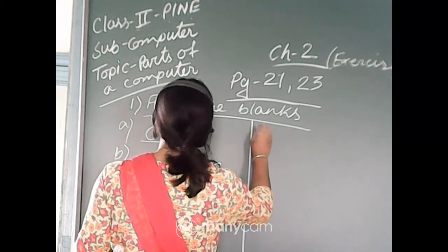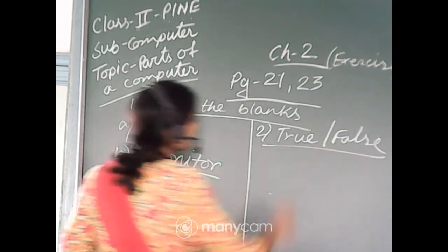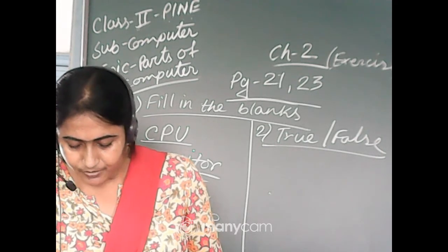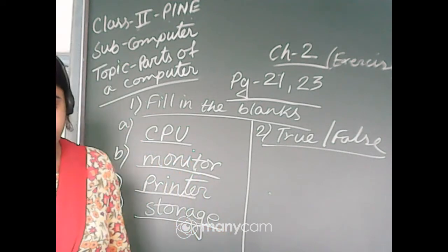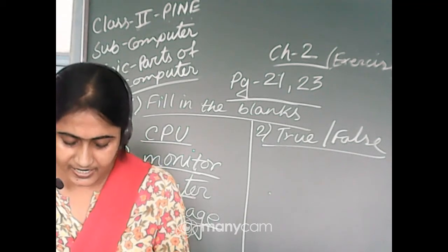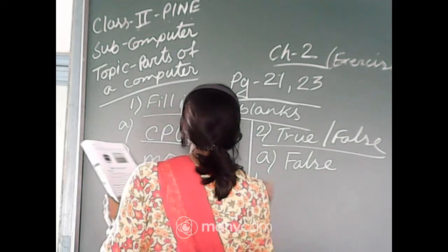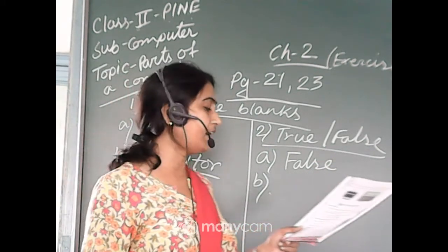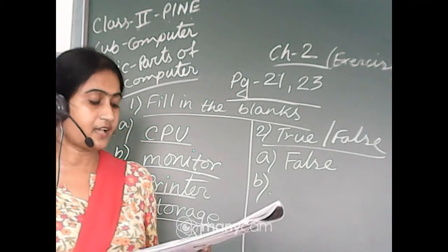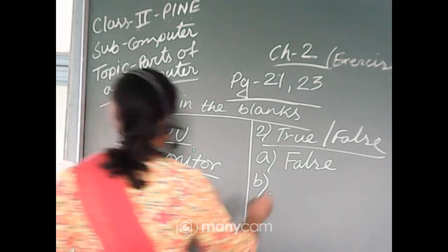Now, on the right side, true or false. Number A: a mouse is used to type text and numbers. Reza, very good. A mouse is used to type text and numbers — false — because a keyboard is used to type text and numbers. Number A: false. Number B: a keyboard has a scrolling wheel and two buttons — false — because a mouse has a scrolling wheel and two buttons, not a keyboard. Number B: also false.